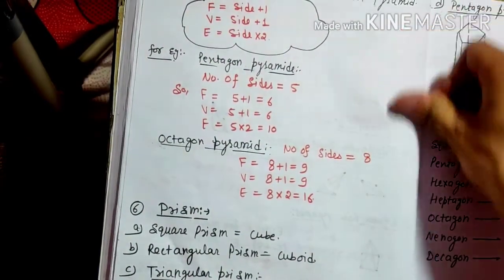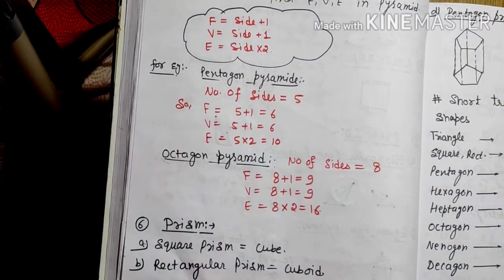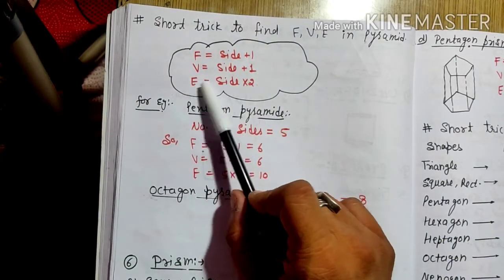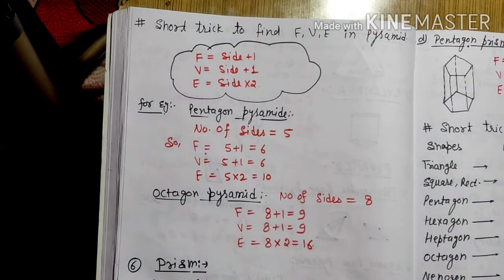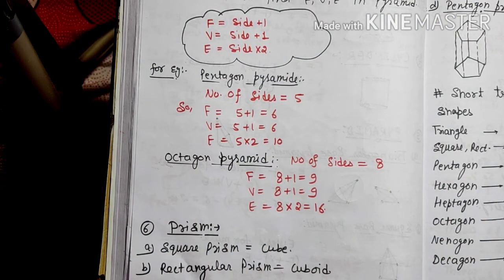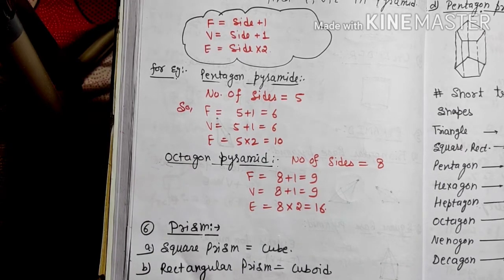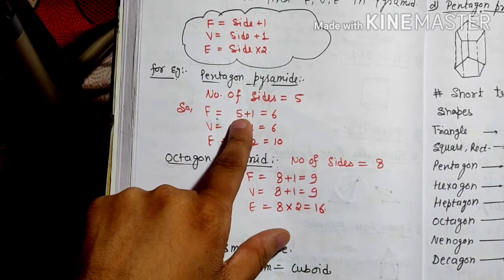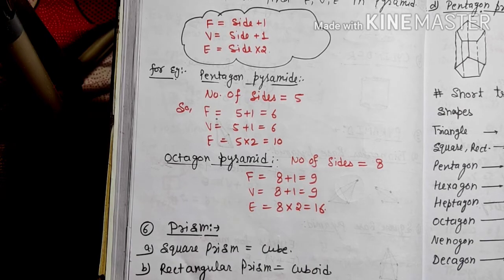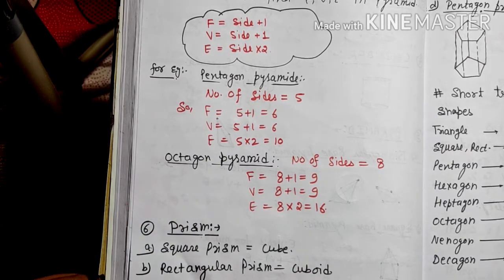Today I will introduce a short trick to find face, vertex, and edge in any type of pyramid. The formula is: face equals side plus 1, vertex equals side plus 1, and edge equals side multiplied by 2. For example, in a pentagon pyramid there are 5 sides, so faces = 5+1 = 6, vertex = 5+1 = 6, and edge = 5×2 = 10. For an octagon pyramid, sides = 8, so face = 9, vertex = 9, and edge = 8×2 = 16.